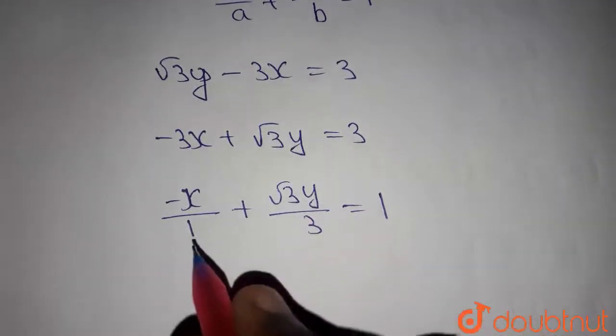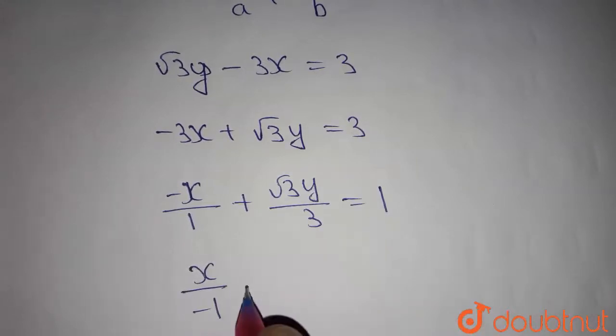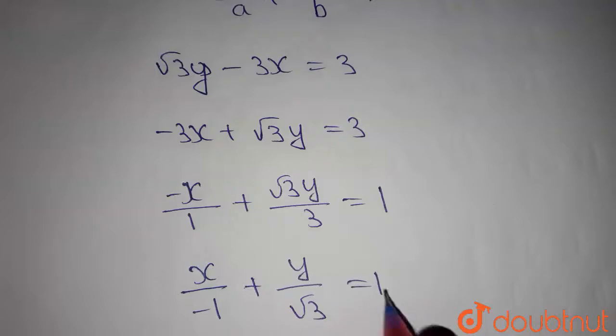So root 3 root 3 cancel out each other. Then we get the equation as x by minus 1 plus y by root 3 equals 1.